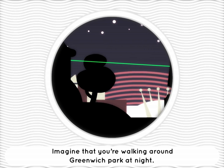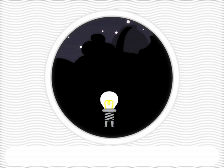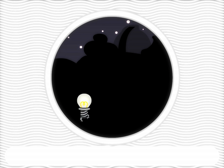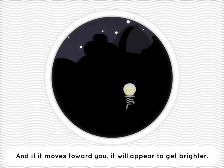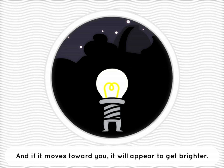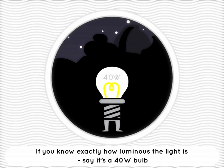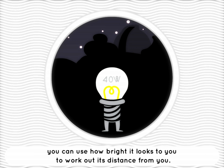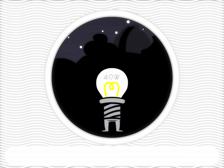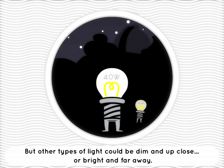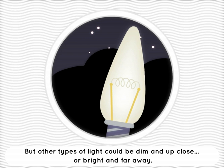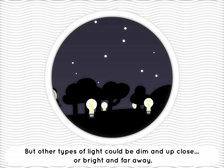Imagine that you're walking around Greenwich Park at night and you see a light. If the light moves away from you, you'll see it appear to get dimmer, and if it moves towards you it will appear to get brighter. If you know exactly how luminous the light is — say it's a 40 watt bulb — you can use how bright it looks to you to work out its distance from you. And you can do the same for any other 40 watt bulbs. But other types of light could either be dim and up close or bright and far away.